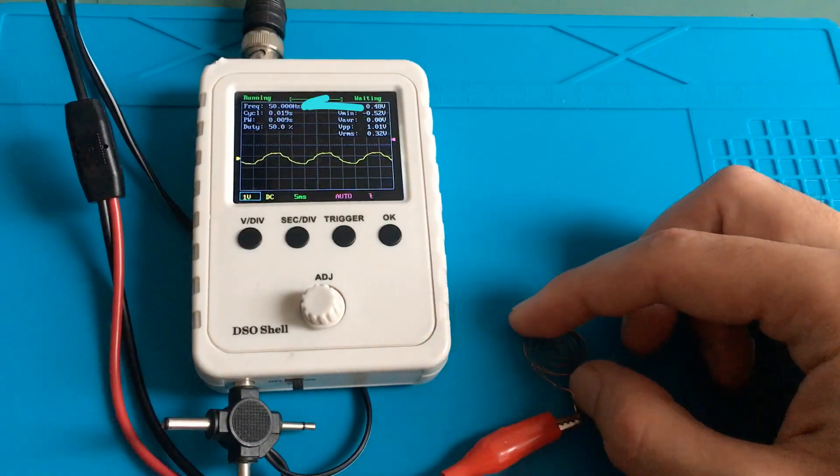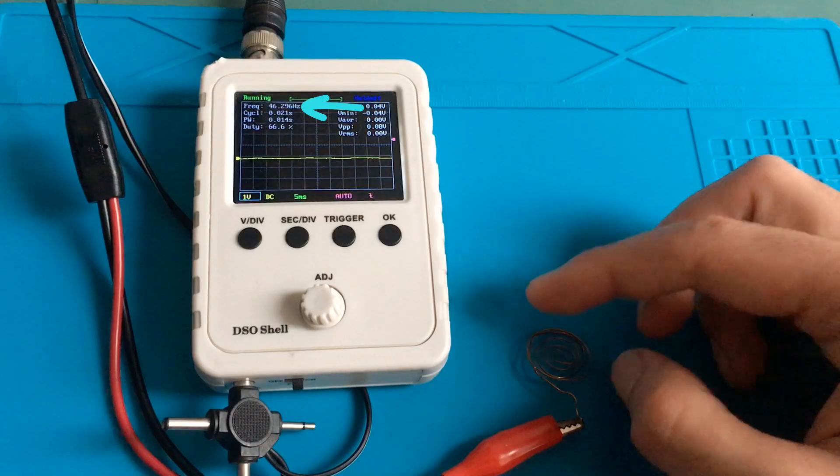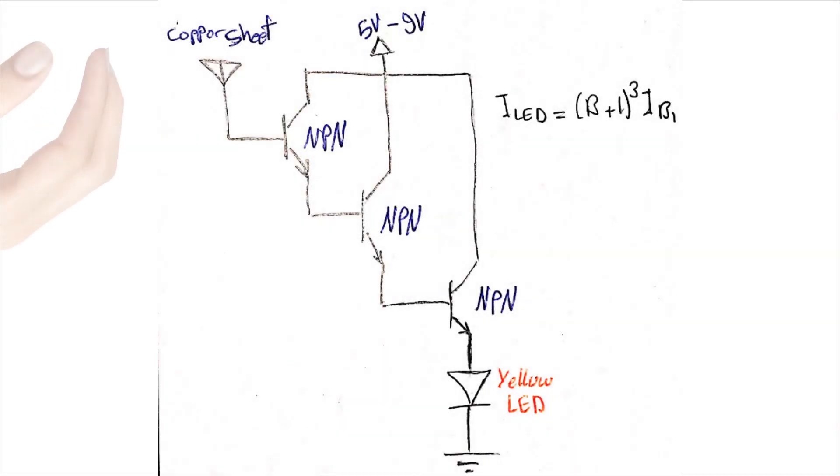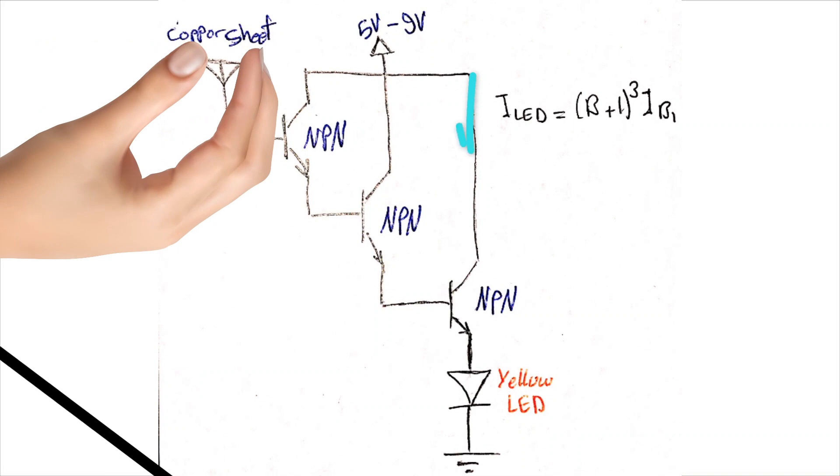That's why when touching an oscilloscope probe, you will see some signal with 50 Hz frequency. So touching the antenna with a bare hand will simulate getting this circuit close to a live wire, and the yellow LED will light up.